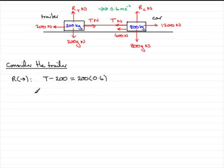So what we need to do is just add 200 to both sides. So we'd have 200 plus the 200 times 0.6. 200 times 0.6 is 120. Add those two together and you've got a tension then of 320 newtons.